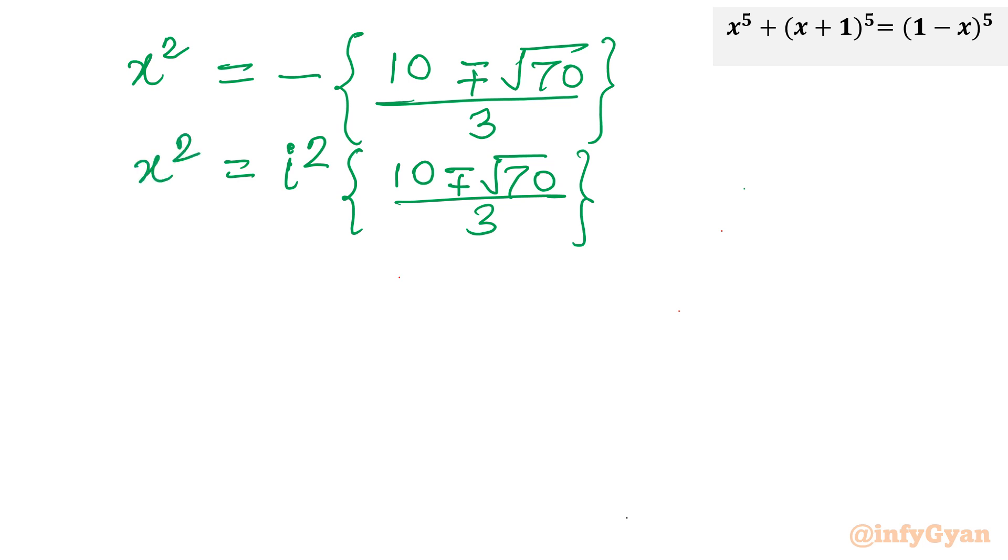Now this minus I will consider i square it is. And the same curly bracket, 10 minus plus square root 70 over 3. Now consider square root both sides. So once I will take square root both sides, x will become plus and minus i. And then I will put over there square root 10 minus plus root 70 over 3.